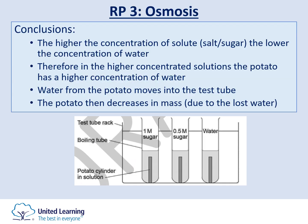In your conclusion, use the osmosis definition to describe what happened. For the 1 mole sugar solution: the higher the concentration of solute, the lower the concentration of water. So in that tube, there is a high concentration of solute and therefore a lower concentration of water in the solution. The potato has the higher concentration of water, so water moves from the potato into the test tube, and the potato decreases in mass due to water loss.